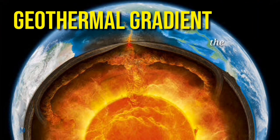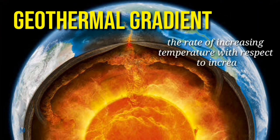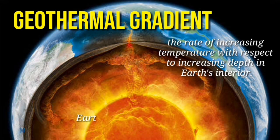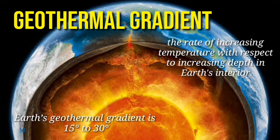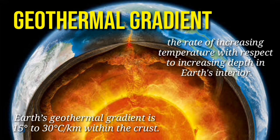Earth's temperature increases with depth but not at a uniform rate. This is called the geothermal gradient, which refers to the rate of increasing temperature with respect to increasing depth in Earth's interior. Earth's geothermal gradient is 15 to 30 degrees Celsius per kilometer within the crust.